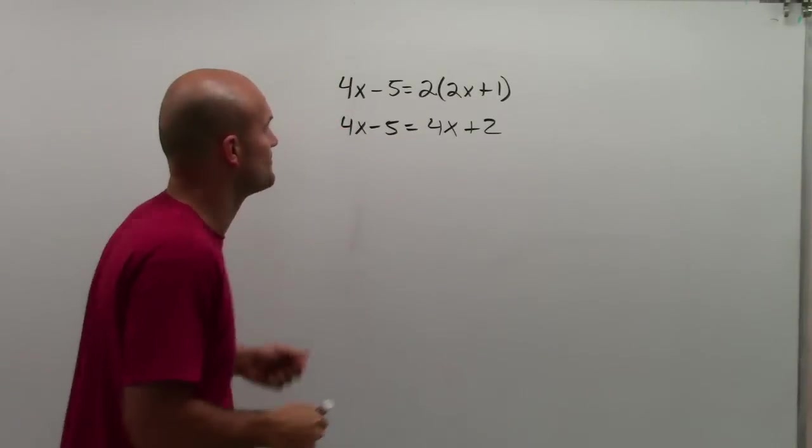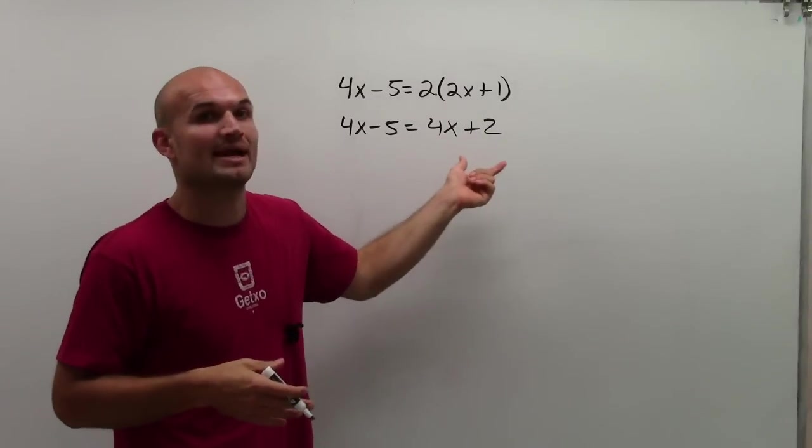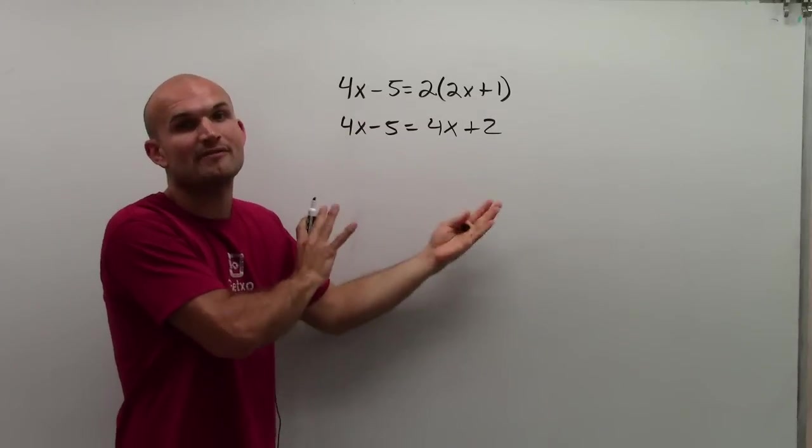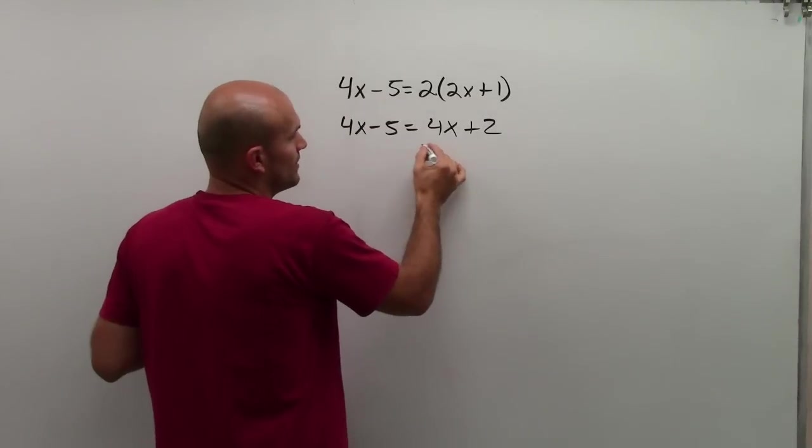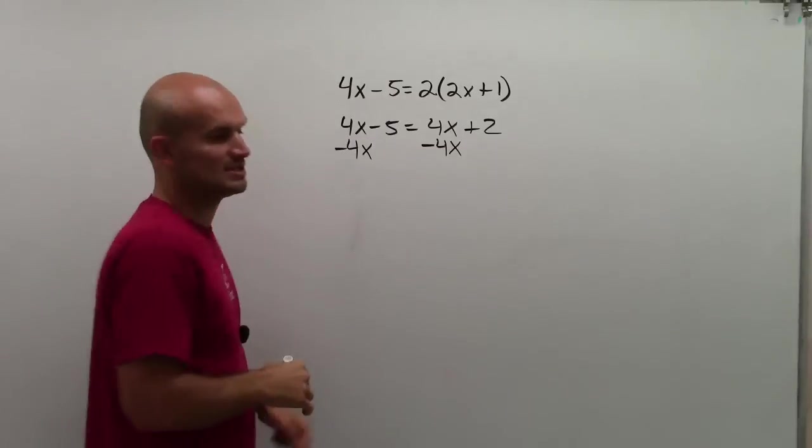So let's say I want to get rid of the 4x on the right-hand side to leave only my variables on the left-hand side. So what I'm going to have to do is I'm going to subtract the 4x on both sides.